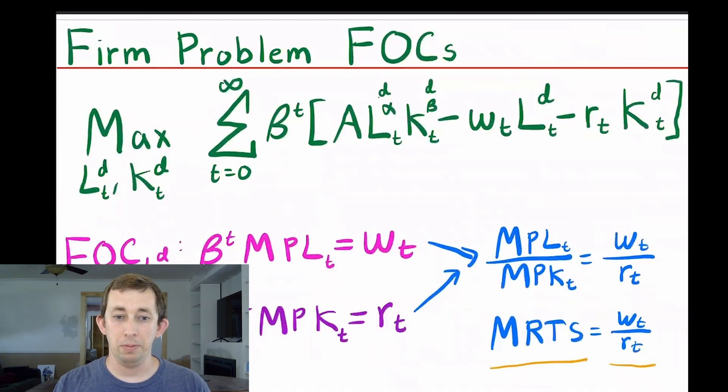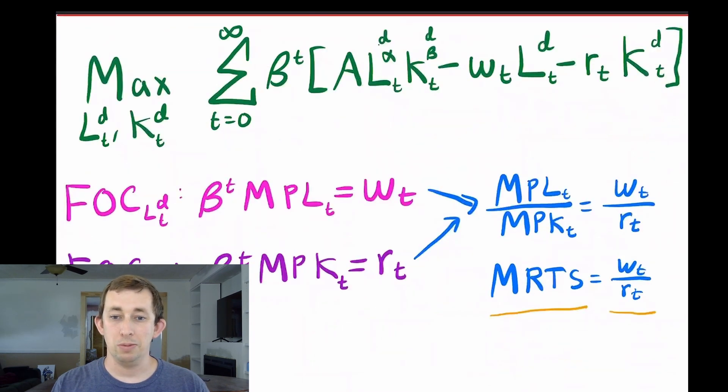The firm problem is this profit maximization problem. There are no constraints based on the way it's been written, we can take the first order condition with respect to labor and capital. We know from our micro days that the wage and the rental rate should equal the marginal product of labor and the marginal product of capital respectively. So the marginal product of labor over the marginal product of capital equals the ratio of the wage and the rental rate. That's all we need out of the profit maximization problem.